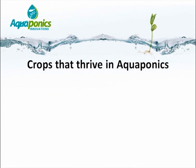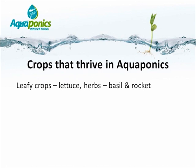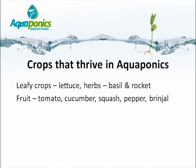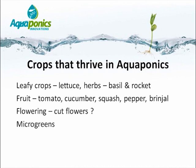What crops thrive in aquaponics? Leafy crops do the best — lettuce, herbs including basil and rocket do exceptionally well. Many fruiting crops such as tomatoes, cucumbers, squash, peppers, brinjals, and even watermelon also do very well. Flowering crops are uncharted territory, but there is every reason to believe they would grow exceptionally well, and inside a greenhouse tunnel the quality should be very good. Microgreens have also been grown very successfully, though selling them in a small town has been the challenge.